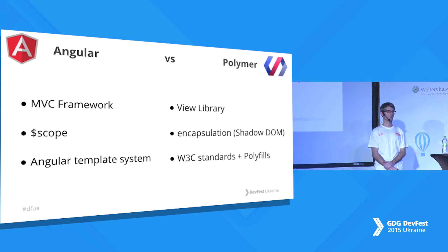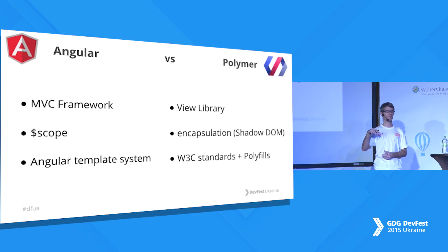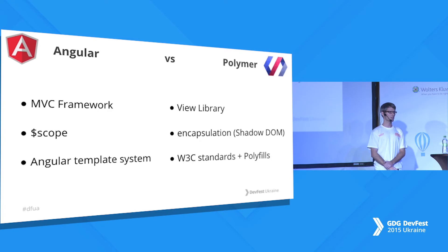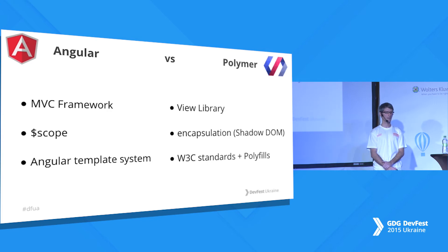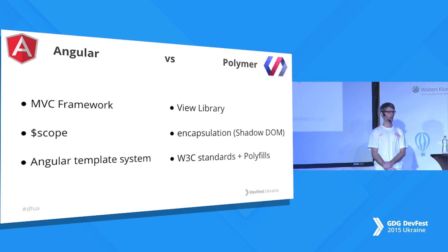Angular also has its own templating system. As we saw, you can define your own elements — called directives — and you can also specify them with class names or comment syntax in your HTML. Angular works by going through the HTML and compiling it. But Polymer uses W3C standards to identify your elements, so it knows them and inserts them in the right place.